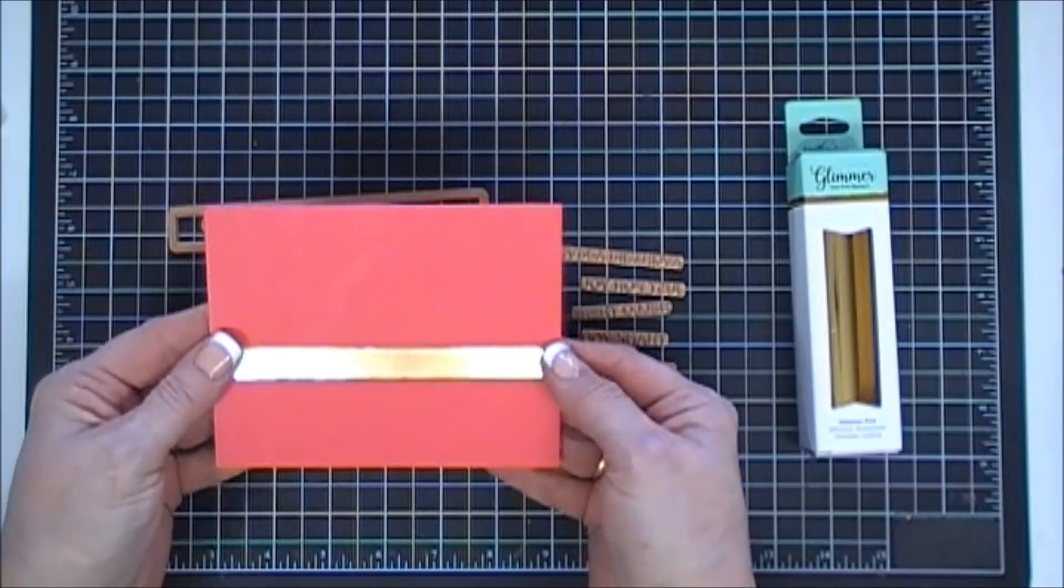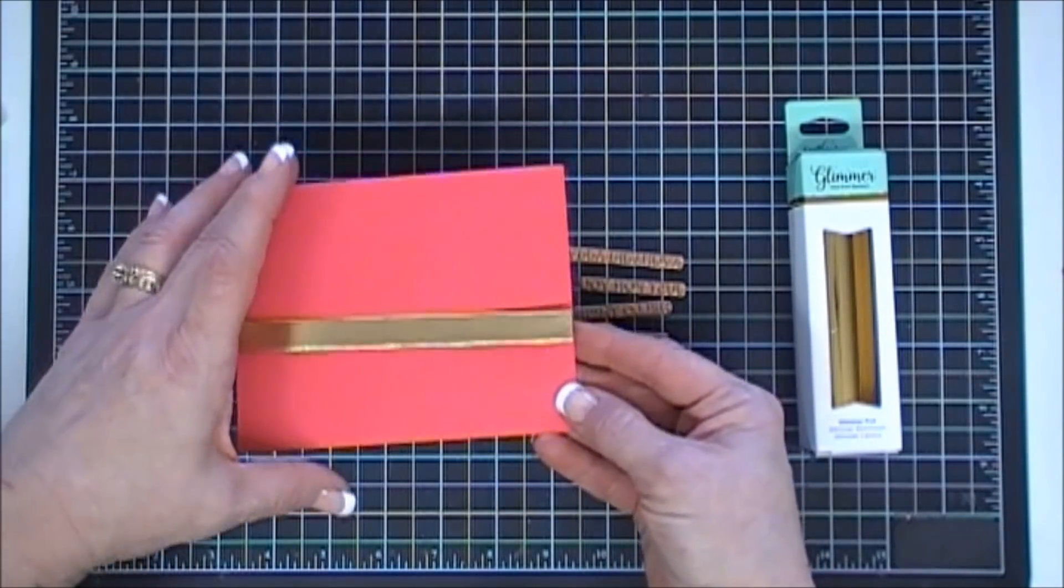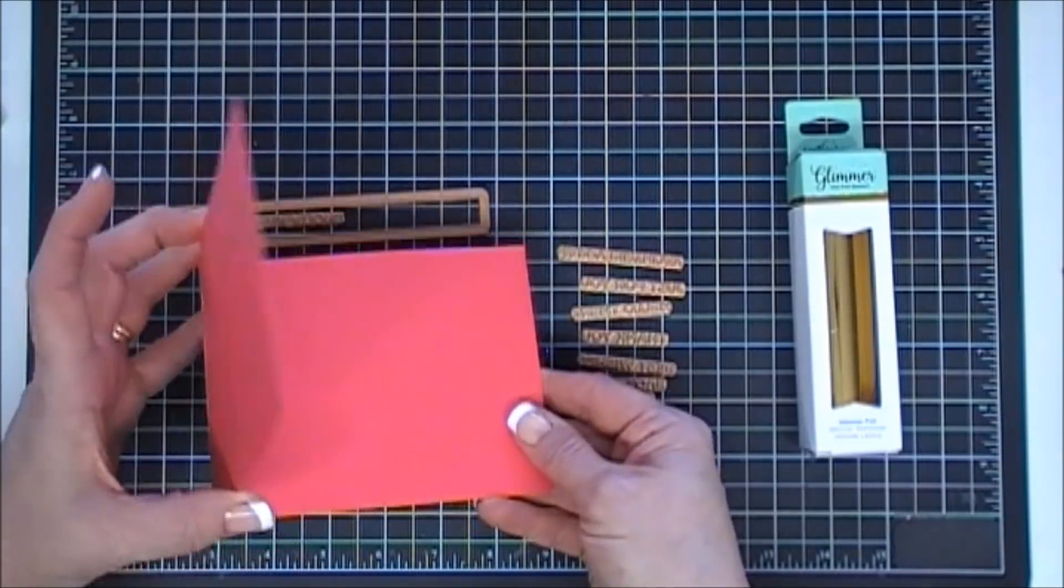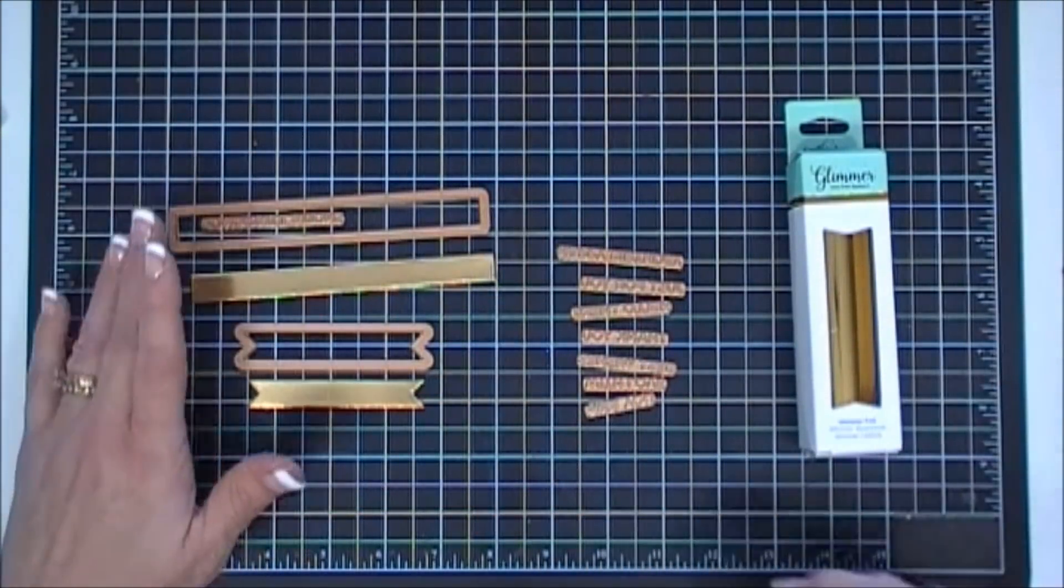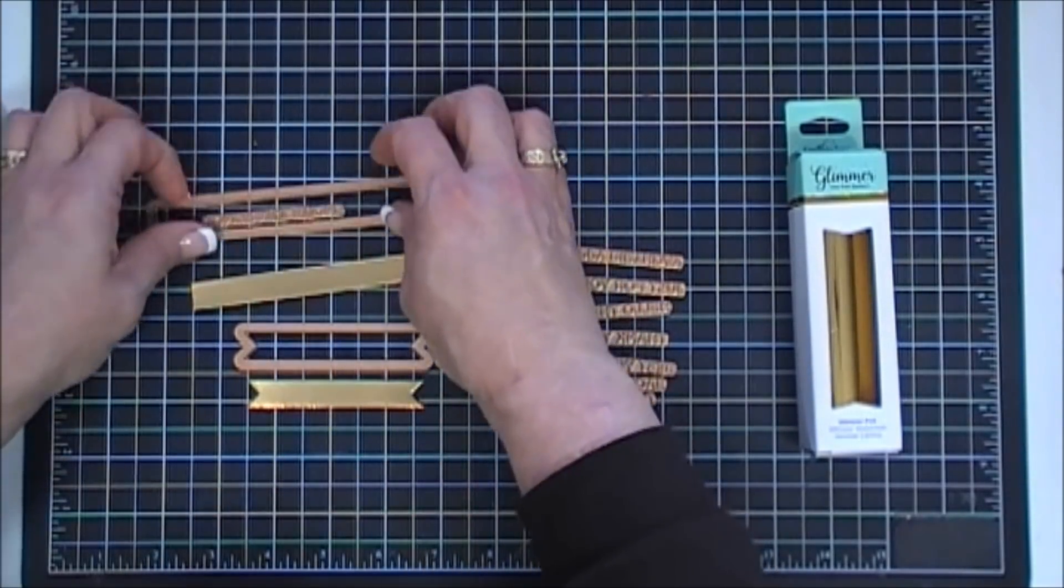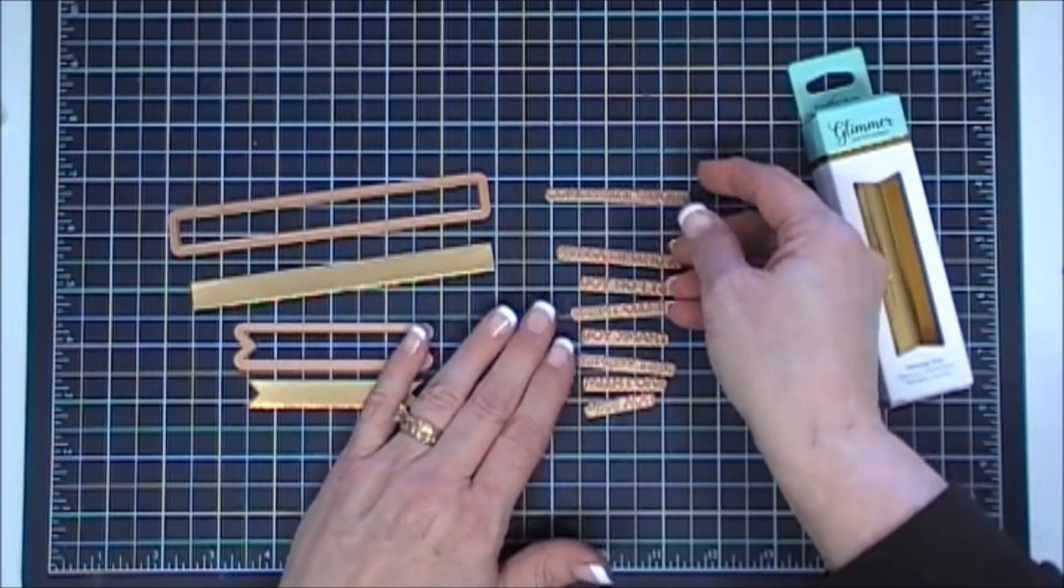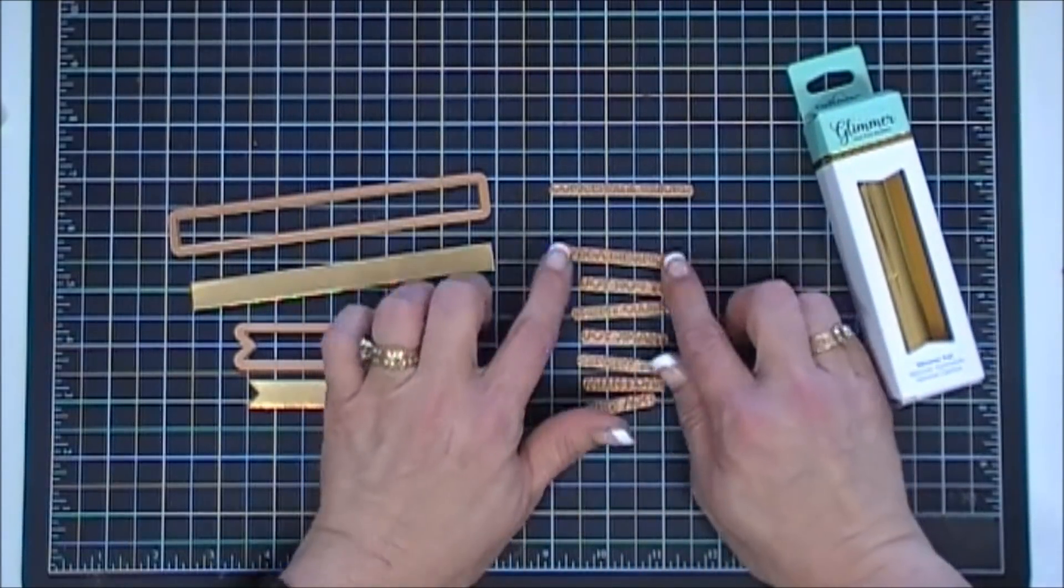When you add gold foiling to your foil plates that you created on your project, it just makes a super elegant card. So I'm so excited about these. Now these are all blocked off and there's eight in total. I like the fact that they are blocked off because there are some beautiful elegant glimmer plates out there with sentiments.